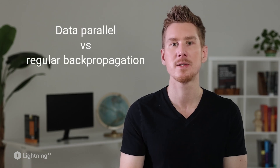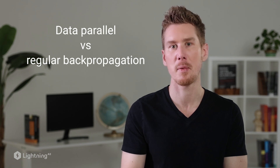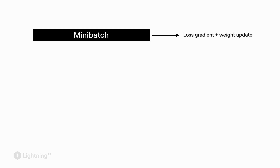Before we move on, I wanted to give a brief note about the implementation details — specifically how data parallelism differs from regular backpropagation. In regular backpropagation, we compute the loss, the gradients, and the weight updates based on the whole mini-batch.